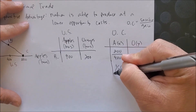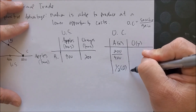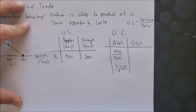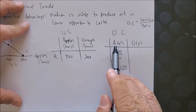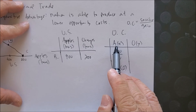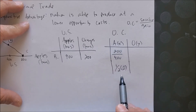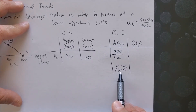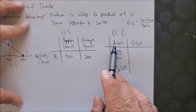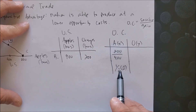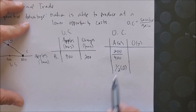So we can say that if the United States chooses to produce one more apple, it's going to give up — as an opportunity cost — half of the production of an orange. To produce one more apple, the U.S. must give up half of the production of an orange.